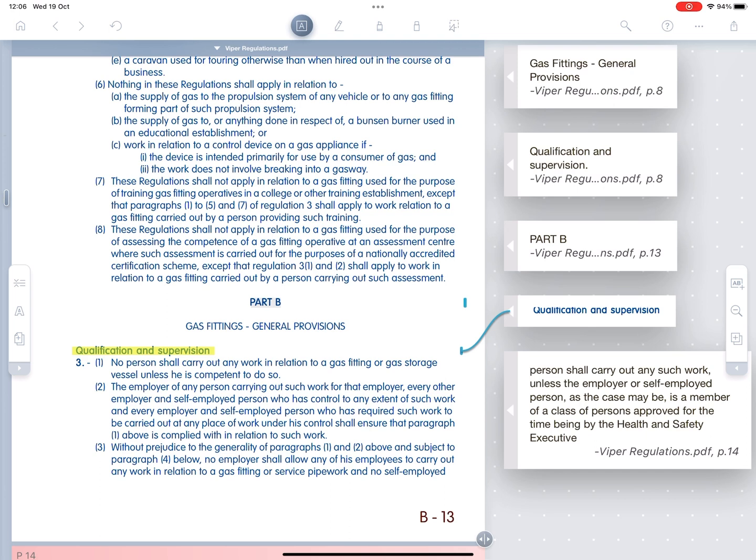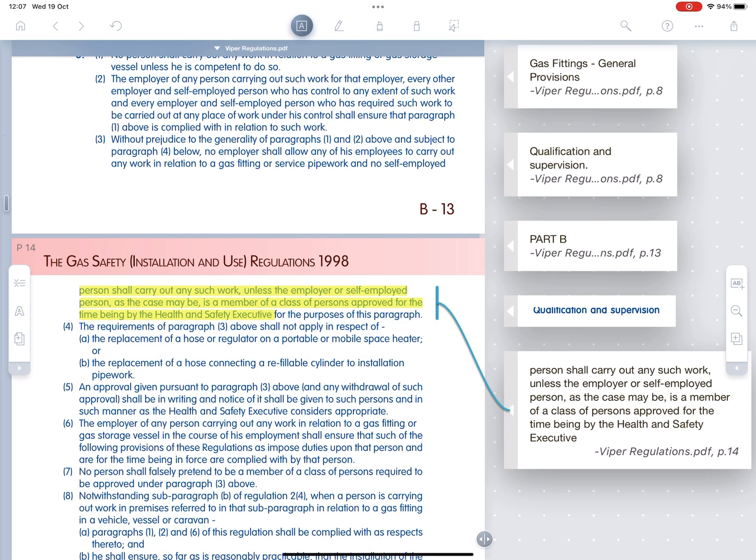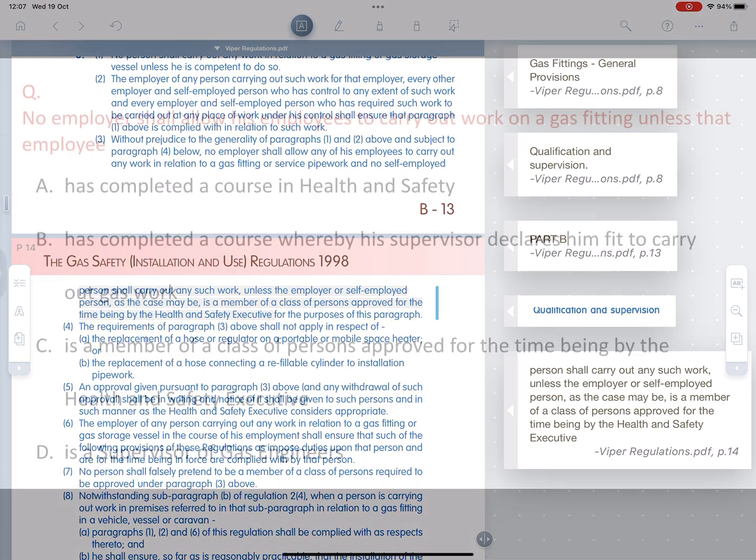Qualification - that sounds about right. That sounds what we're looking for. So that is section three. We're going to go and have a look and see if section three contains anything that sounds like it should be an answer to that question. Under the qualifications and supervision, we just read down the paragraphs. And as we go down, no person shall carry out work unless he's competent to do so, etc. But when you get down to three, it says there, no person shall carry out such work unless the employer or self-employed person, as the case may be, is a member of a class of persons approved for the time being by the health and safety executive. That exactly matches one of your answers.